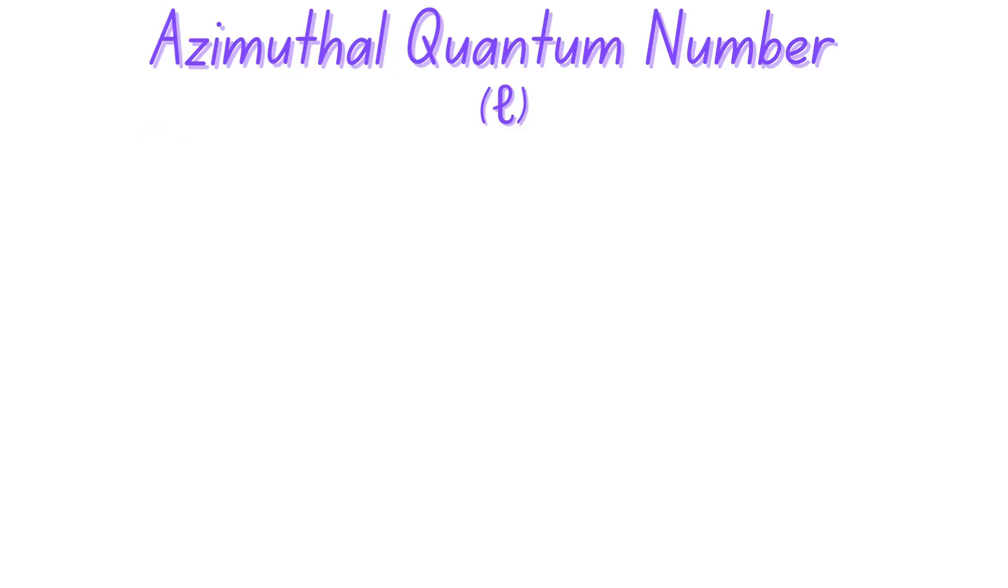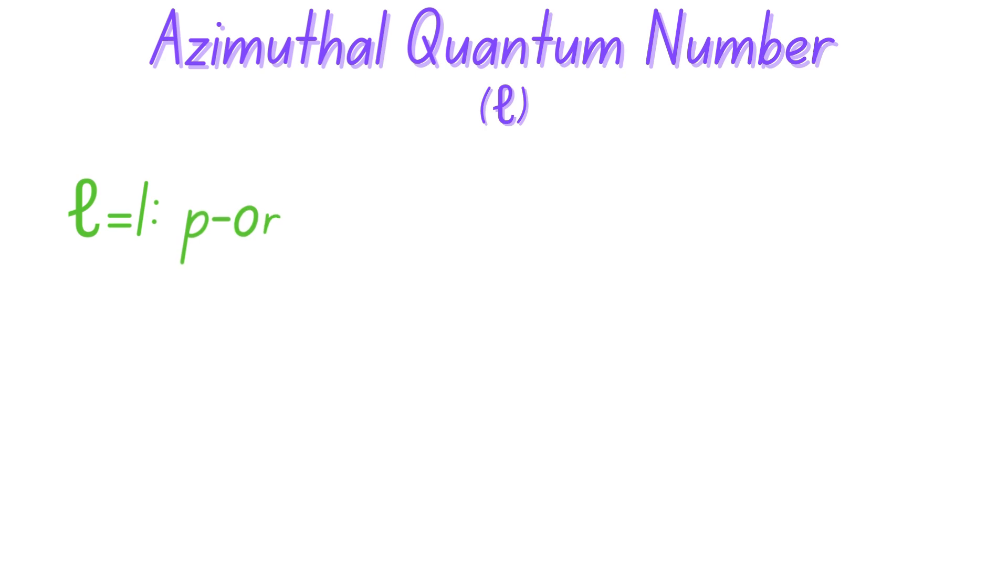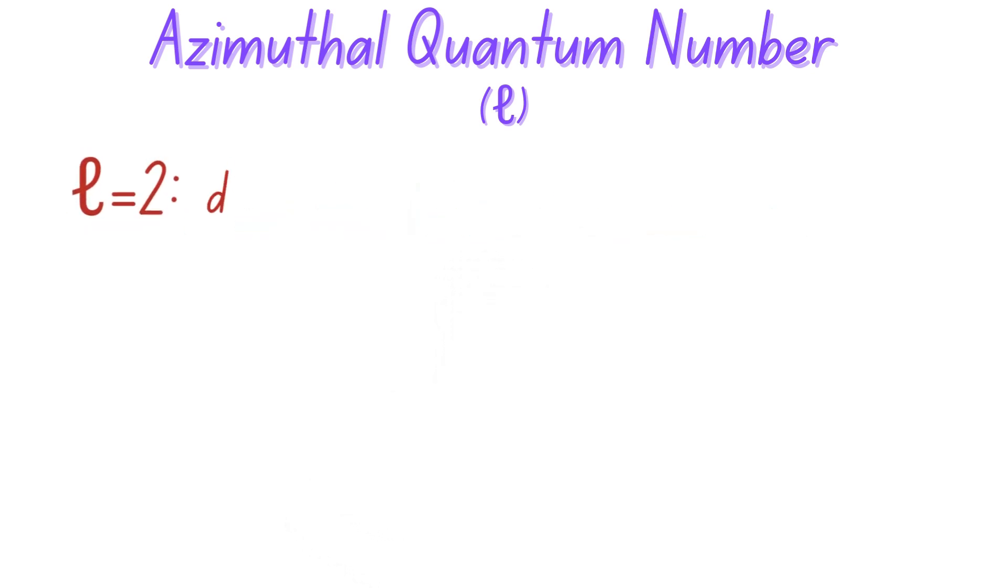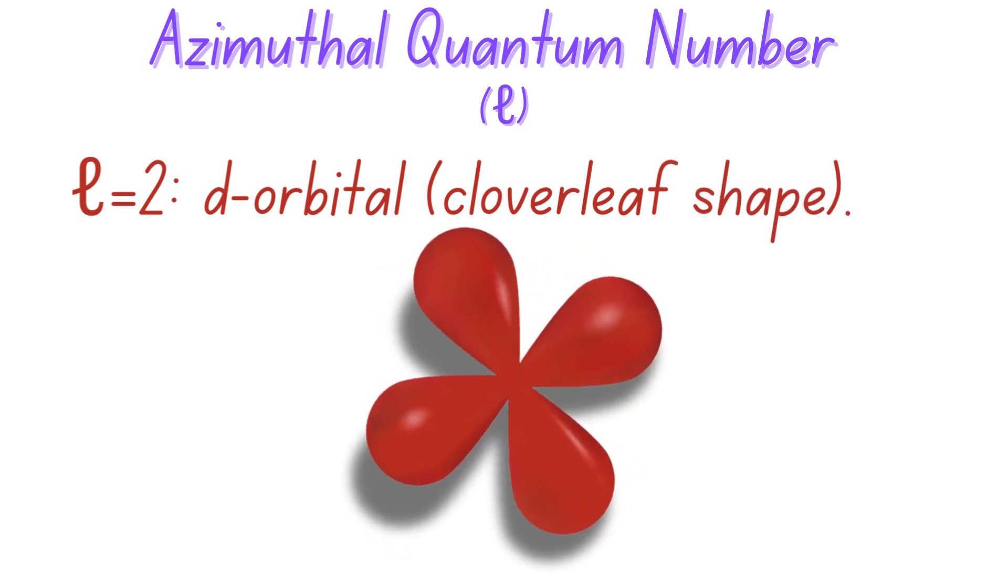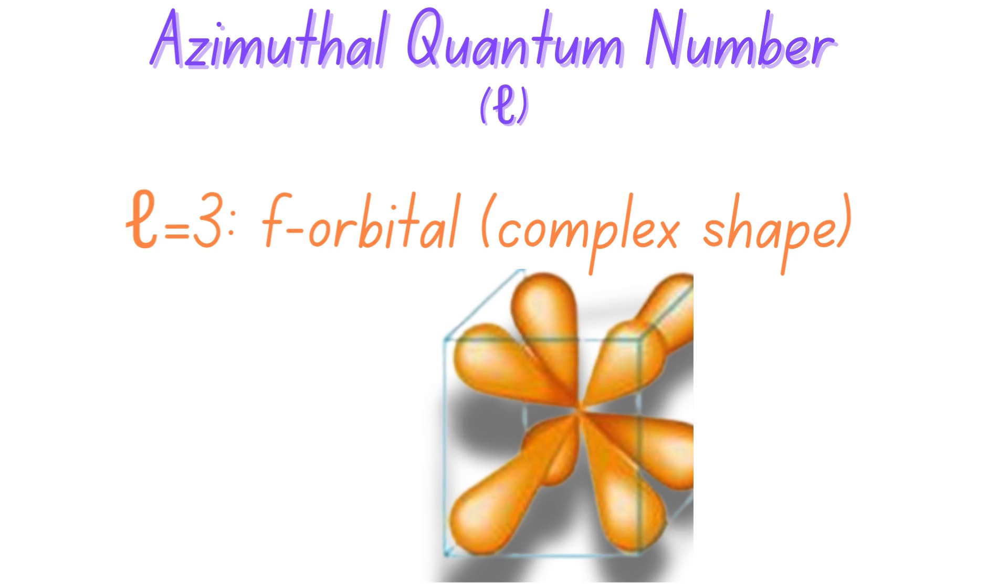The l also shows us the orbital shape. When l is equal to zero, it's an s orbital with a spherical shape. When l is equal to one, that's a p orbital with a dumbbell shape. When l is equal to two, that's a d orbital with a clover leaf shape. When l is equal to three, that's an f orbital with a complex shape.